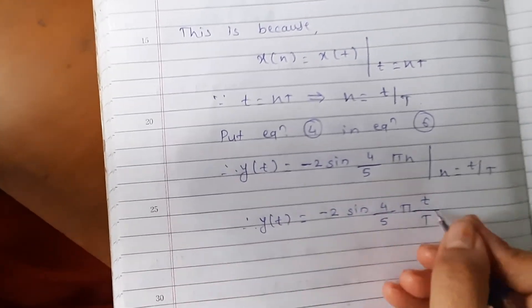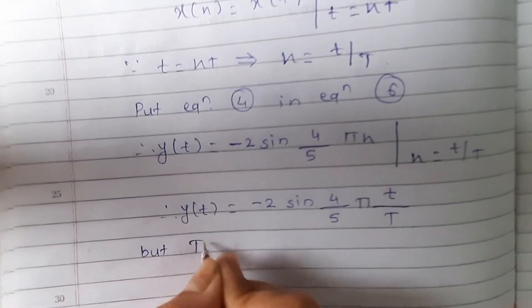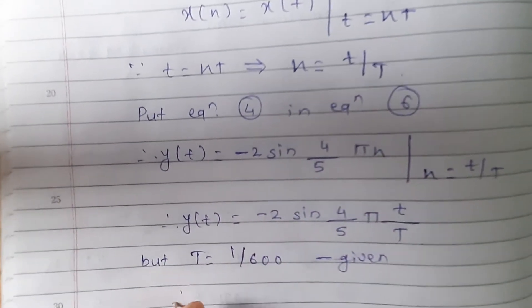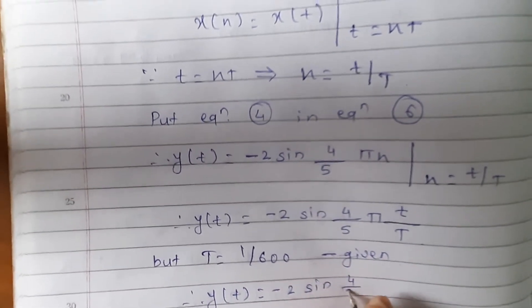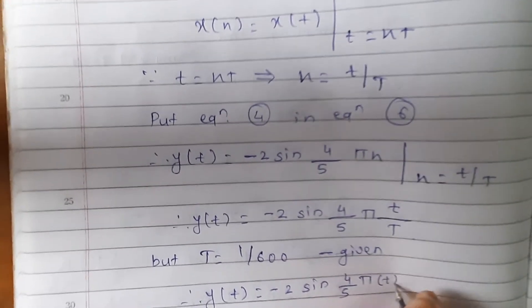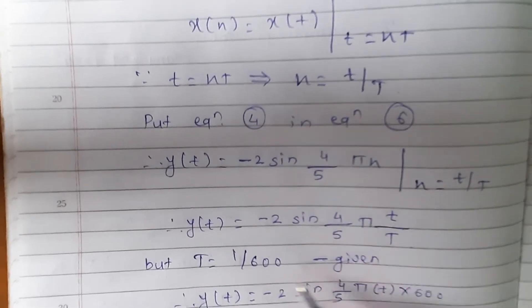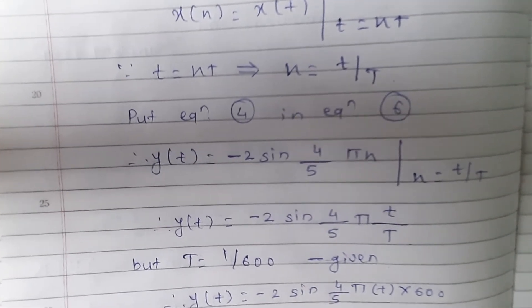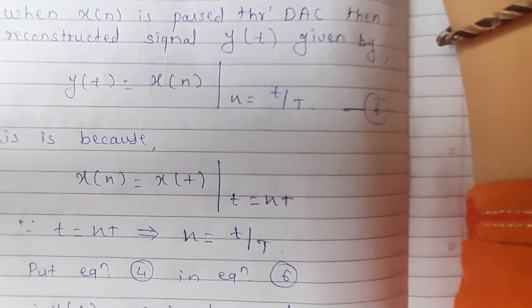We have the value of T = 1/600. Substituting, y(t) = −2sin(4π/5 · (t/T)) = −2sin(4π/5 · 600 · t) = −2sin(480πt).